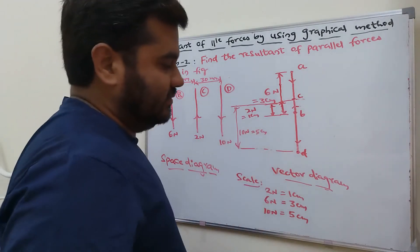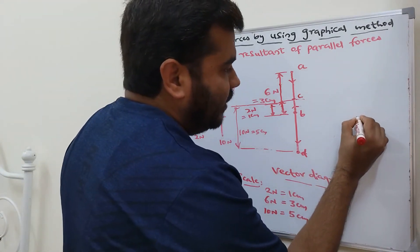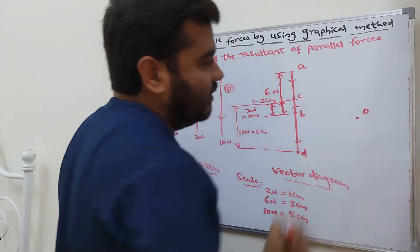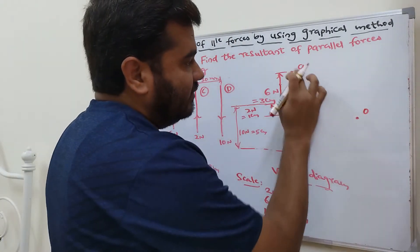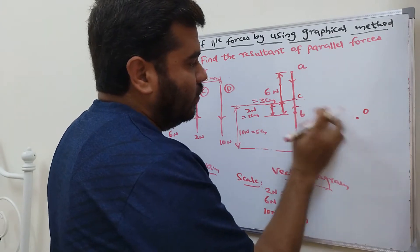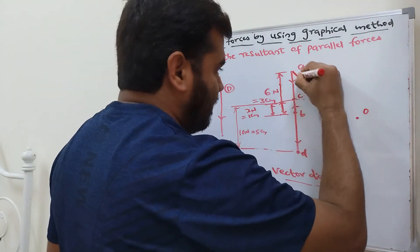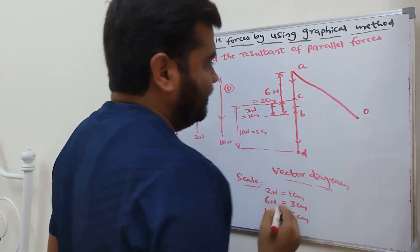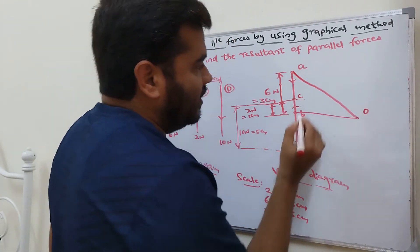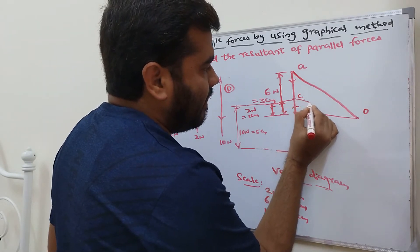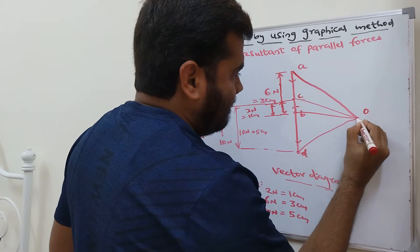After completing the force vectors, take any convenient point O. Join OA, OB, OC, and OD to complete the vector diagram.